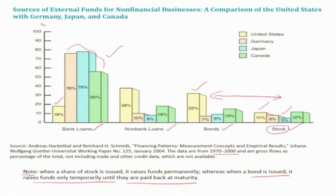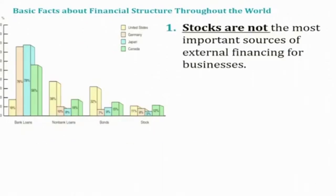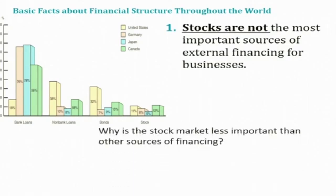The major inference from this figure is that, in contrast to what we normally think, stocks are not the most important sources of external financing for businesses. This raises the question: why is the stock market less important than other sources of financing? We will interpret this figure, raise questions, and then answer them in subsequent sessions.